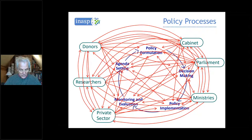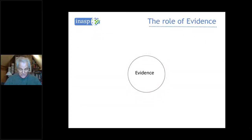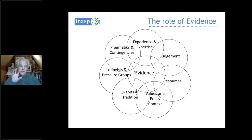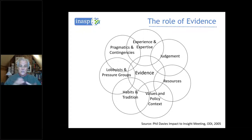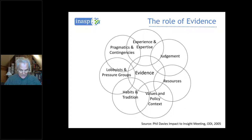Evidence — and particularly research-based evidence — is one of a very large number of factors, and often by far the smallest, which policymakers need to take into account when making decisions. Their own experience, judgment, the resources available, values, policy context, habits and tradition, the activity of lobbyists and pressure groups — these are all factors which policymakers are trying to take into account. You need to recognise that research-based evidence is just one and a relatively small part of that. This picture was developed by Phil Davis, who was instrumental in promoting evidence-based policy in the UK in the Labour Parliament in the early 2000s.